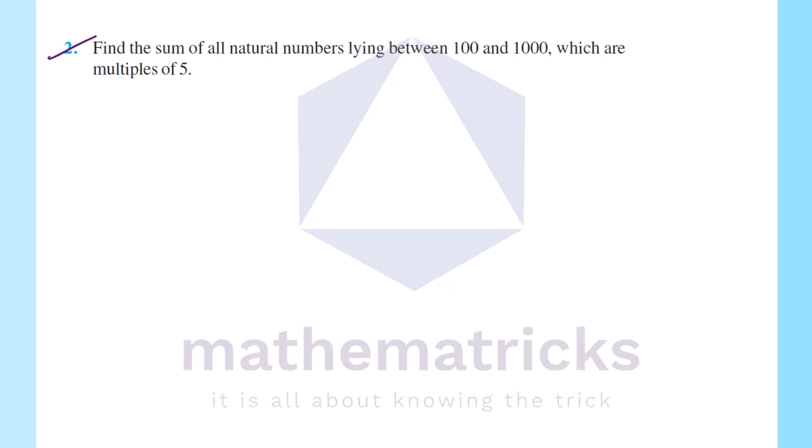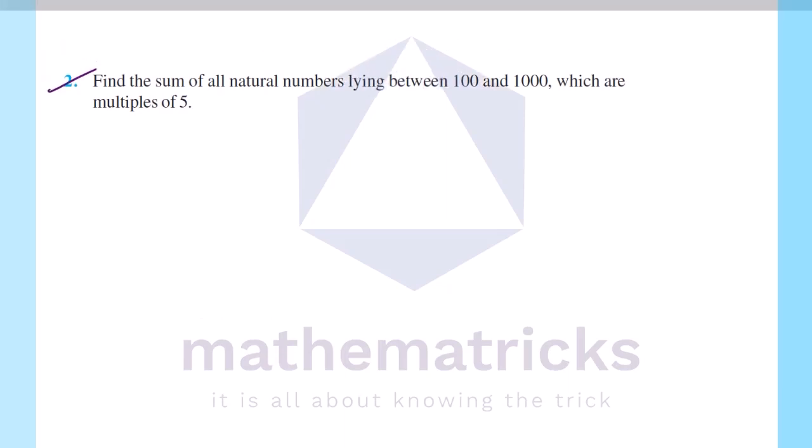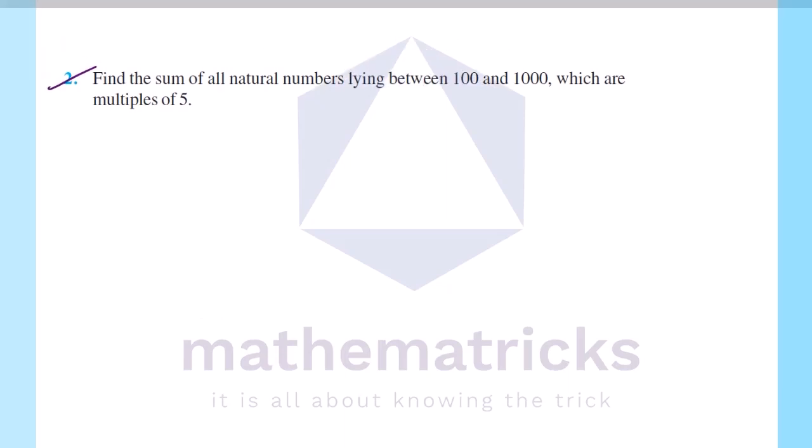Second question: Find the sum of all natural numbers lying between 100 and 1000 which are multiples of 5.